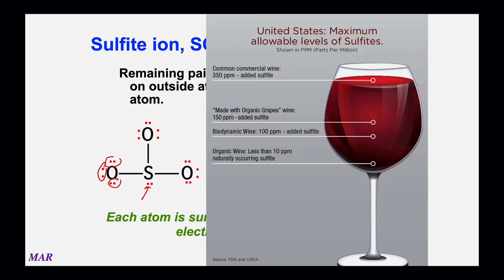A fun note about sulfites: organic grapes wine contains around 150 parts per million, but non-organic wine can have up to 350 parts per million. Truly organic wine should have less than 10 parts per million. We'll talk more about parts per million in a future chapter, but 350 is of course much more than 150. Some people are allergic to sulfites, so this becomes practically important.